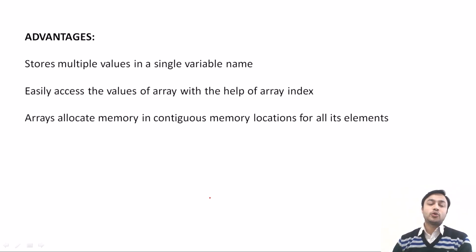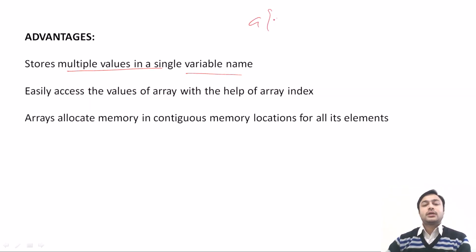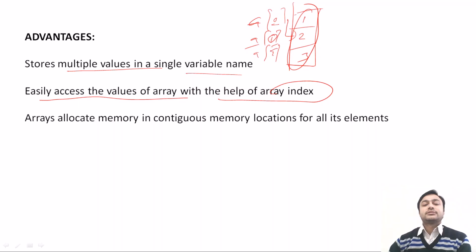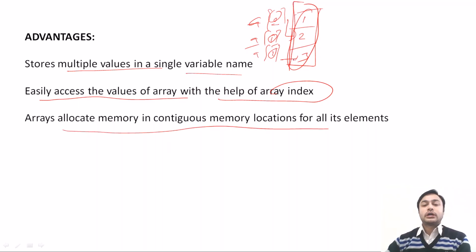What are the different advantages of using arrays in C++? The first advantage is that it is used to store multiple values in a single variable name. Under a single name, you can store multiple values like 1, 2, 3, accessed using index values a[0], a[1], a[2]. It is easy to access values with the help of array index. It also allocates memory in contiguous memory locations.